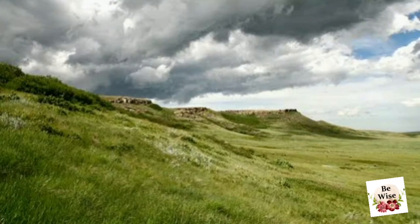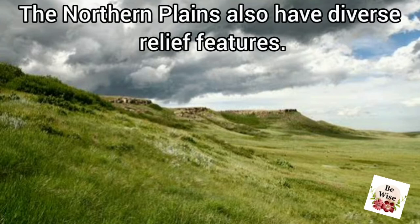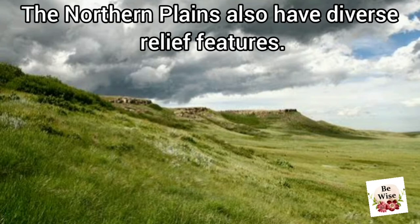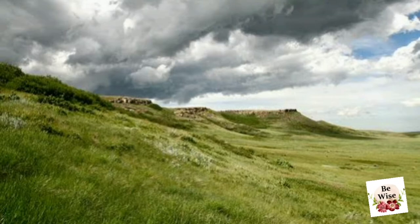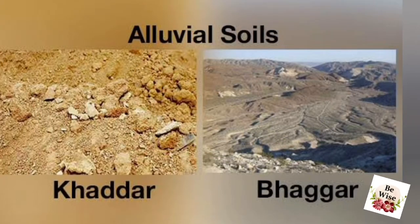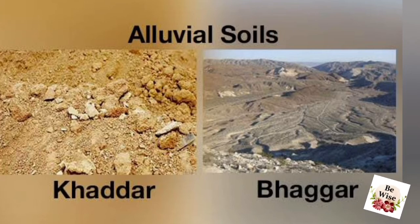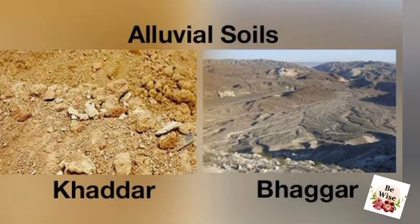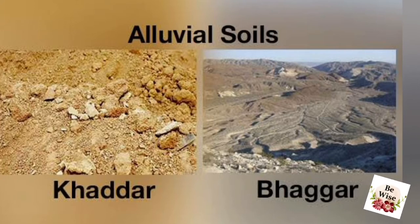The Northern Plains are generally described as flat land with no variation in their relief, but this is not true. These vast plains also have diverse relief features. The largest part of the Northern Plain is formed of older alluvium, known as Bhangar. The newer, younger deposits of the flat plains are called Khadar.